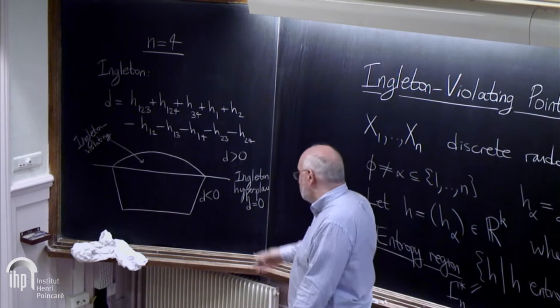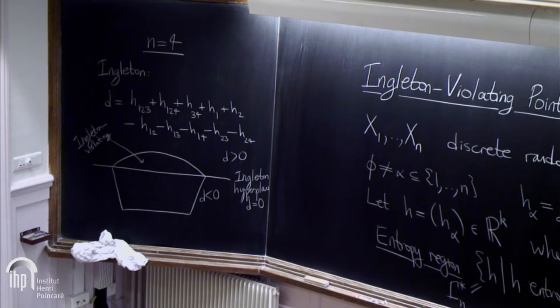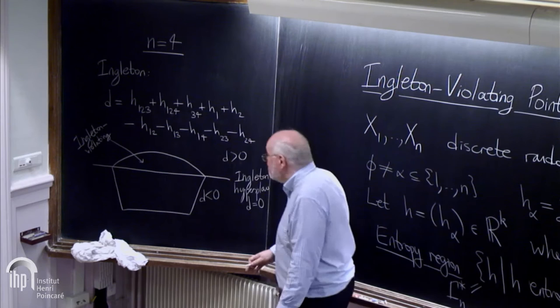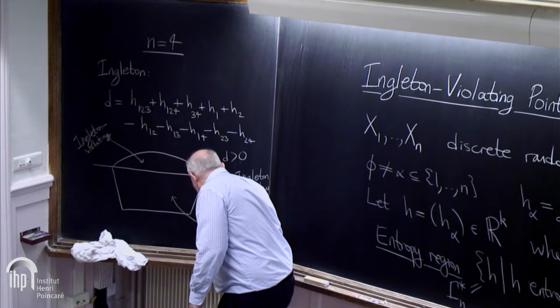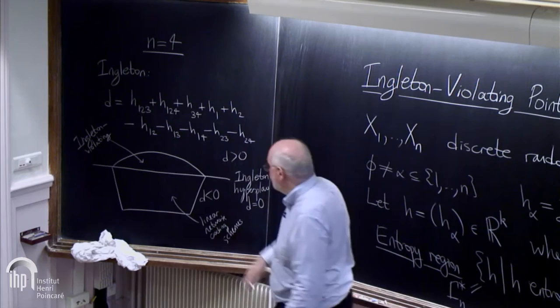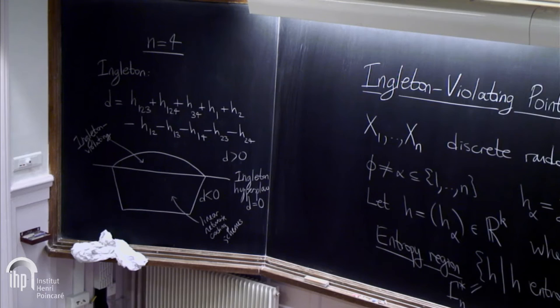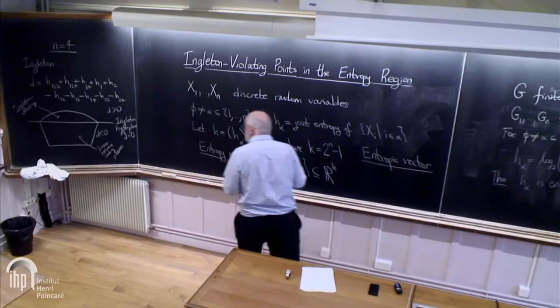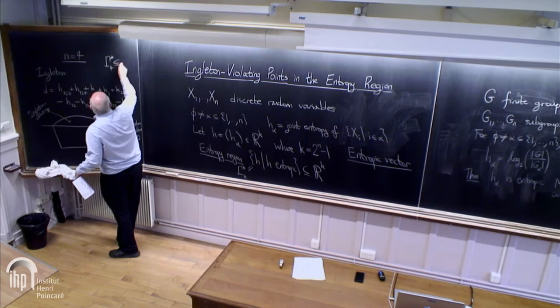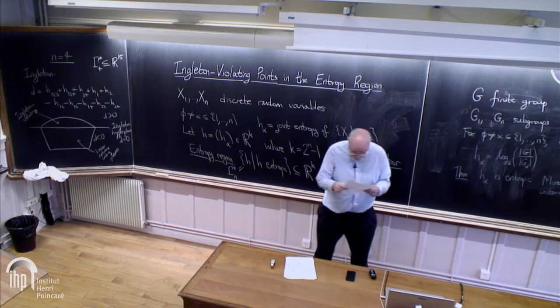You might notice the way I've drawn it like a muffin—the bottom part is polyhedral and any Ingleton satisfying part of gamma n star coincides with gamma n. The interesting stuff is what happens in the Ingleton violating region. From an engineering point of view, linear network coding schemes correspond to points over here. Asking how big this region is is asking how far from optimal you are if you use a linear scheme when maybe you should use a non-linear network coding scheme.